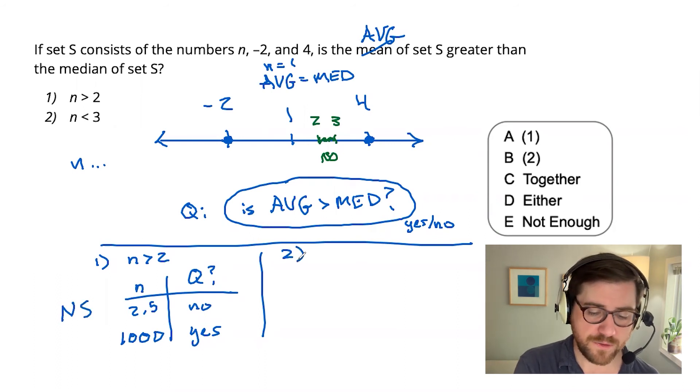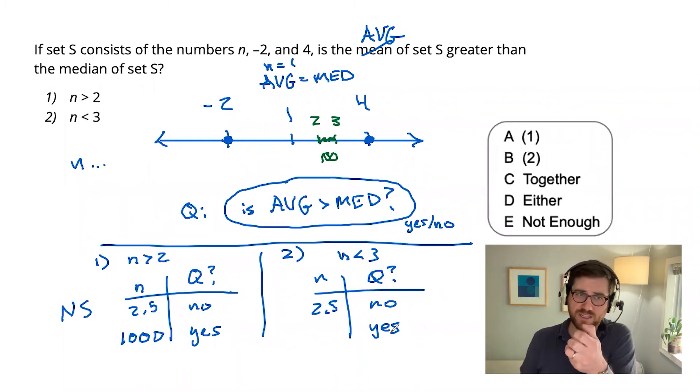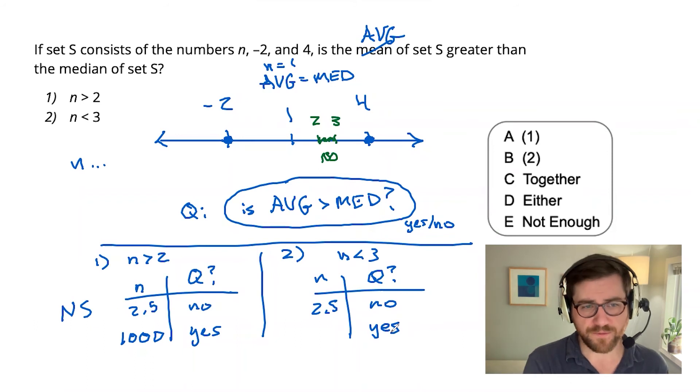How about two on its own? N is less than three. Again, I've got the easy case where N is just 2.5, right in the middle of that no region. So all I have to do here is convince myself that I could get a yes as well. Well, we talked about starting N at one and pushing it up a little. Imagine going the other direction, pulling it down. That's going to pull the median down by however much we pull N down by, but it's only going to pull the average down by a third of that because we're just changing one of the three numbers. So if I were to push it down to say zero, that would be firmly in yes territory. So this is also not sufficient.